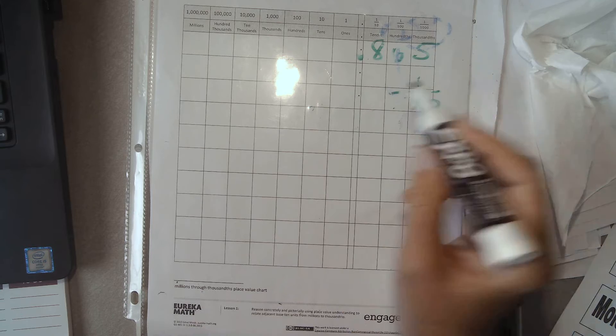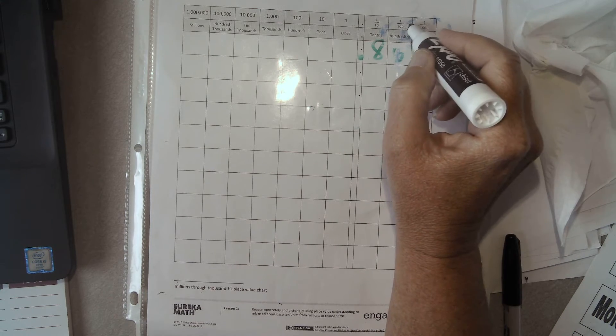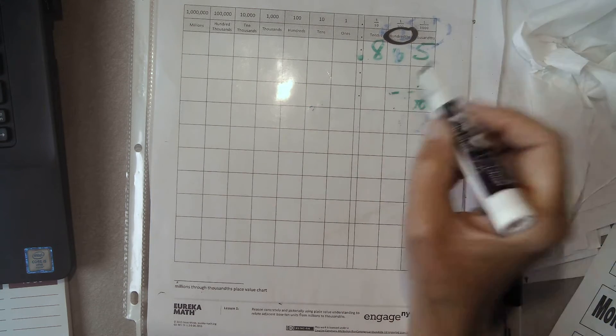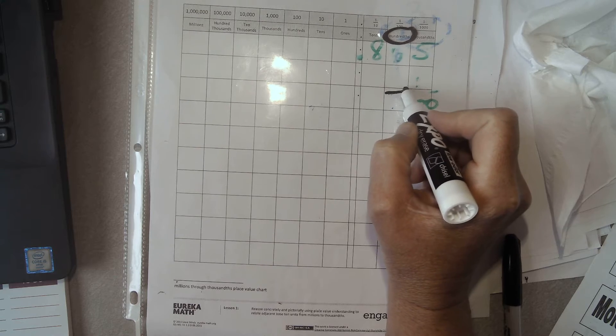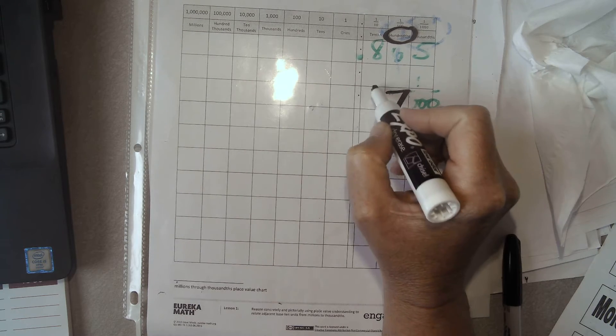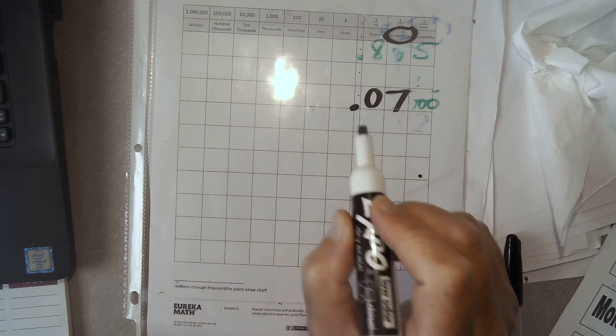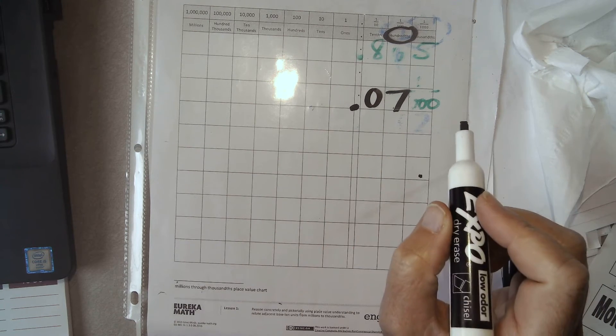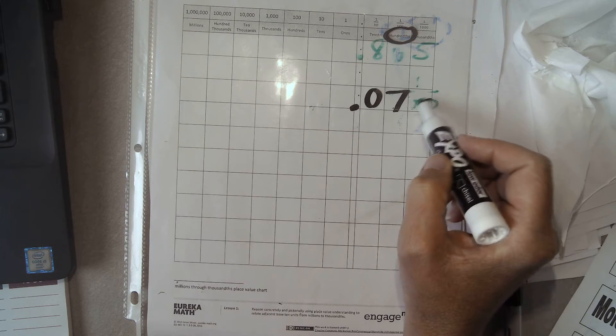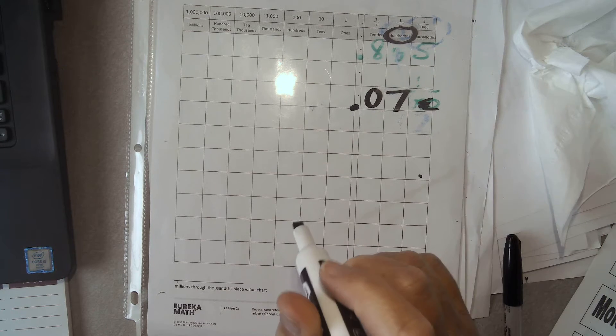If we have 7 hundredths, how do I write that? Well, I can look under hundredths, and I have to have a 7 here. So I can't leave this blank, so I know I have to have a 0 here. 7 hundredths. Not anything else. This is just permanent. Questions, Peyton?